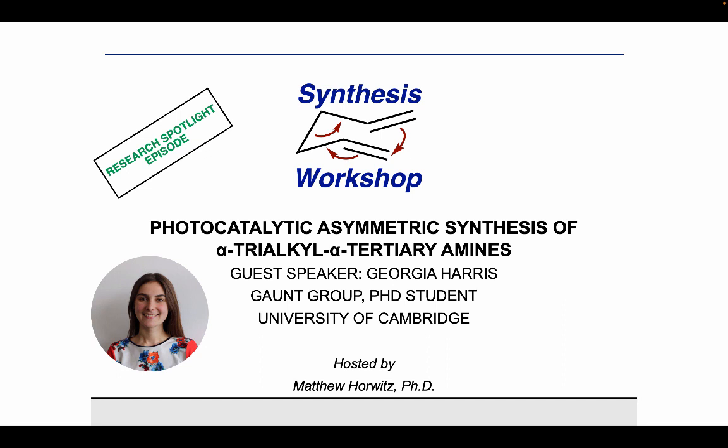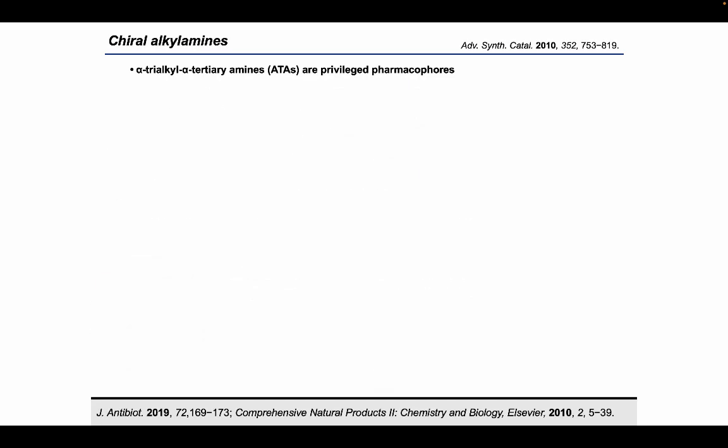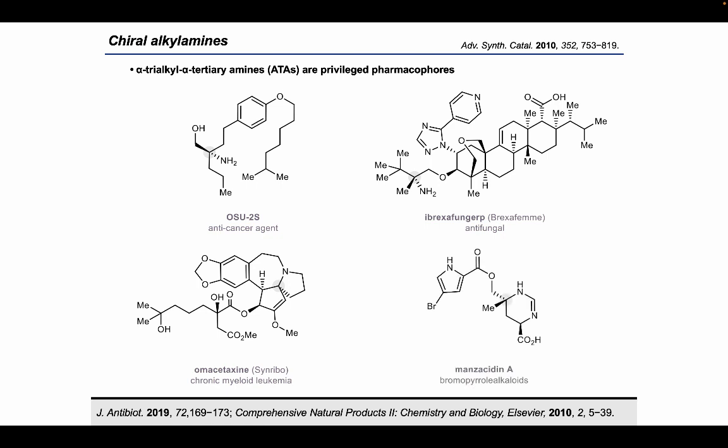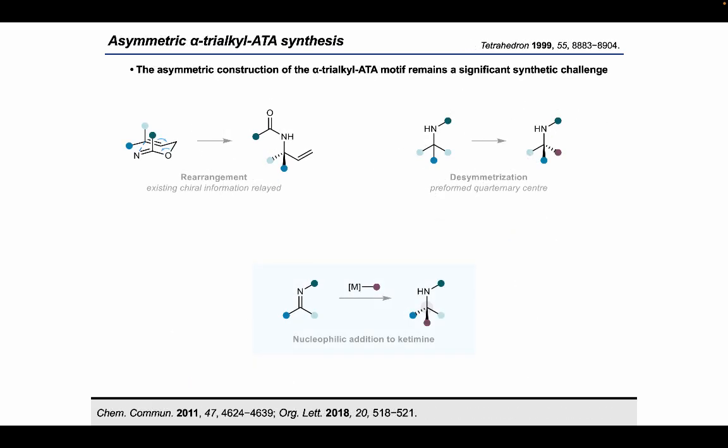Before we think about how best to approach this challenge, first let's consider the scaffold of interest. The alpha tertiary amine motif possesses a fully substituted carbon center adjacent to the amine nitrogen, and in alpha trialkyl alpha tertiary amines all three of these alpha substituents are aliphatic. Many chiral alpha trialkyl alpha tertiary amines impart beneficial therapeutic effects across a range of disease areas and can be found in a variety of biologically active natural products and pharmaceuticals, making them valuable synthetic targets. Methods for the stereoselective construction of alpha tertiary amines are limited mainly due to challenges associated with forging the highly hindered alpha center and finding a system that can stereochemically differentiate between sterically and electronically similar alkyl groups.